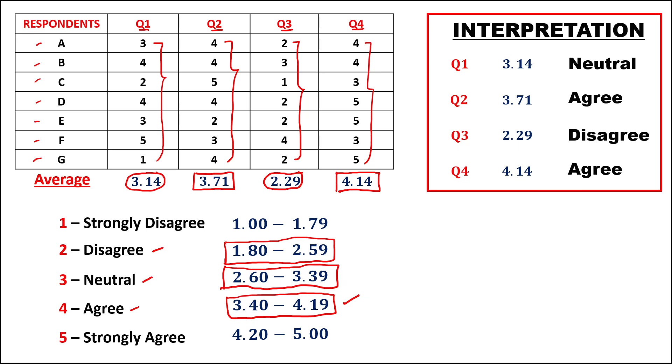So this is how to interpret a 5-point Likert scale result. Thank you.